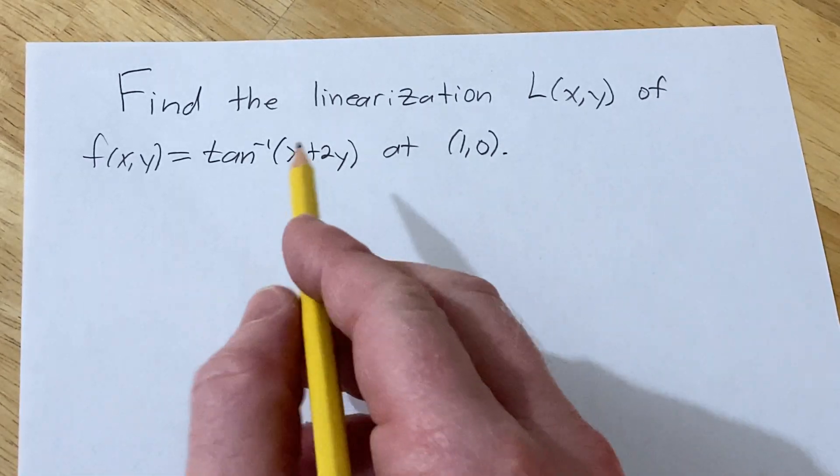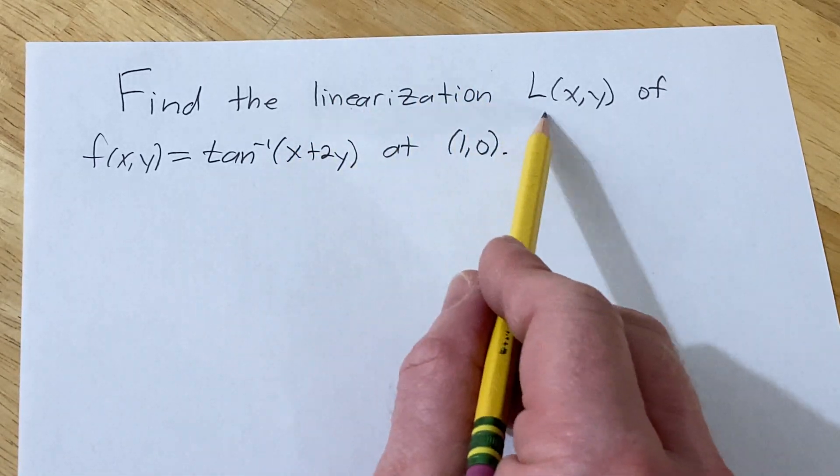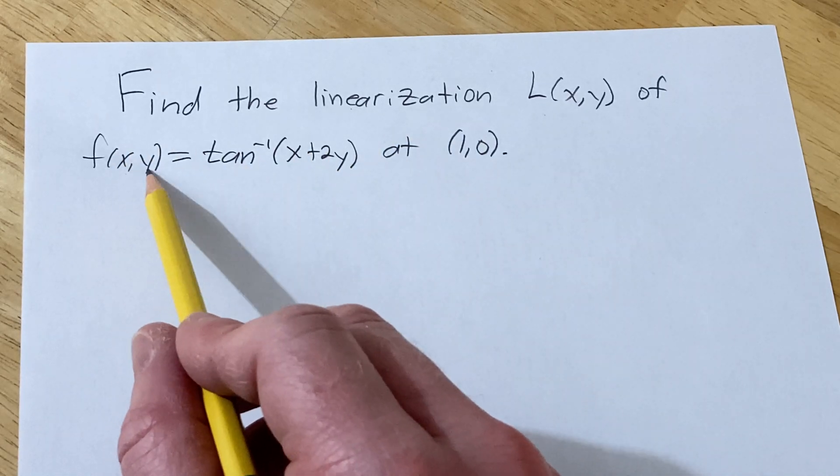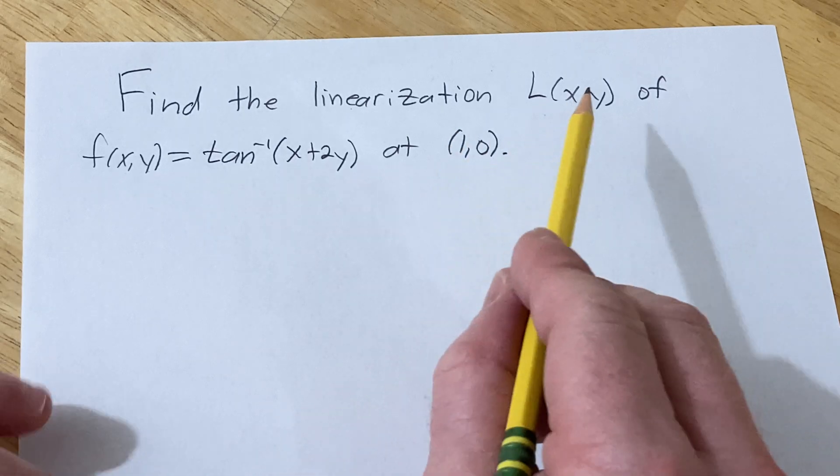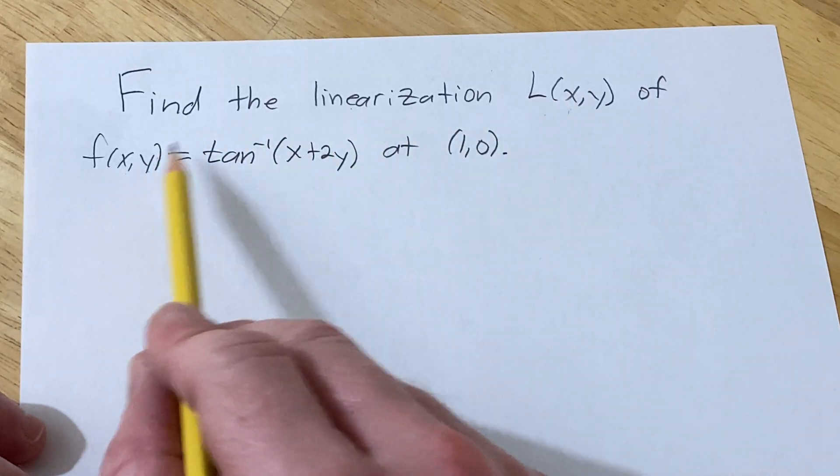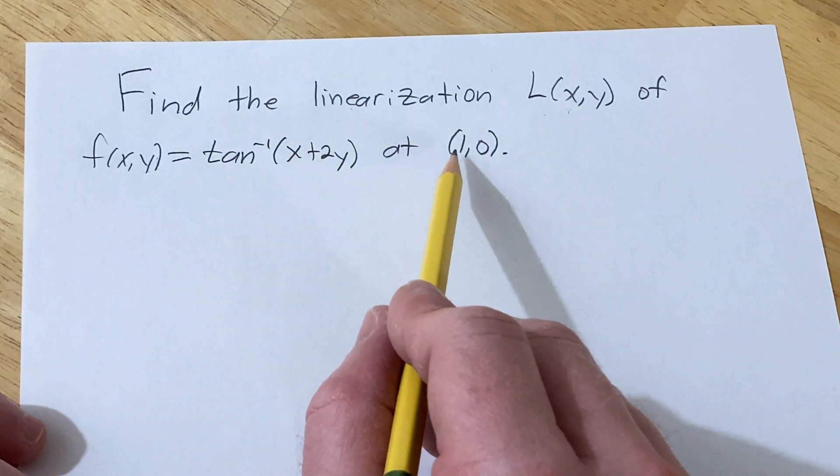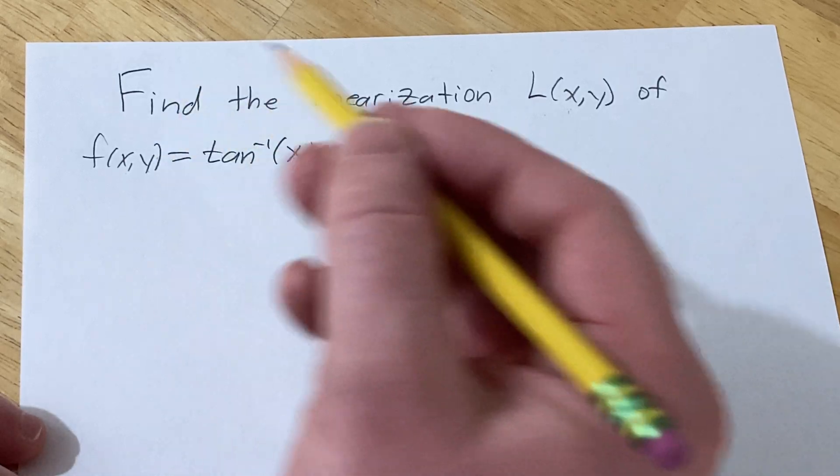Okay, let's do some math. We're going to find the linearization L(x,y) of this function at (1,0). And so basically what that does is it approximates this function whenever our ordered pair is close to (1,0). It's also called the tangent line approximation.